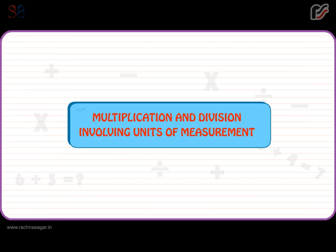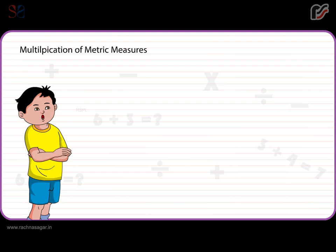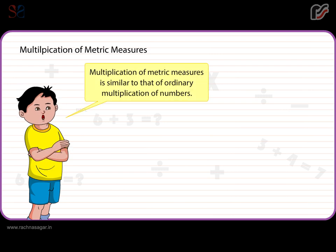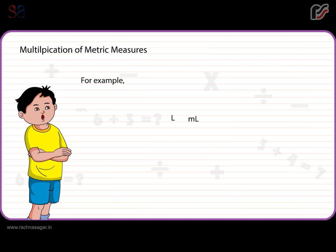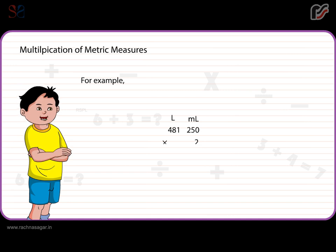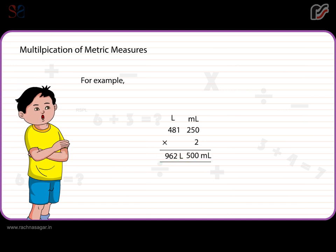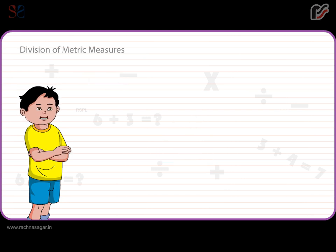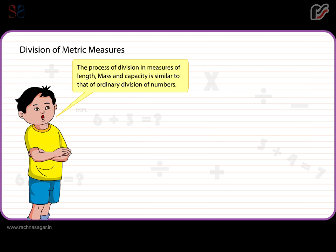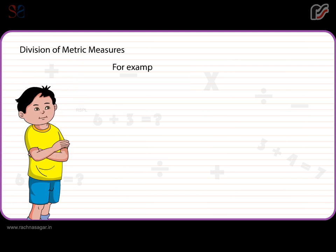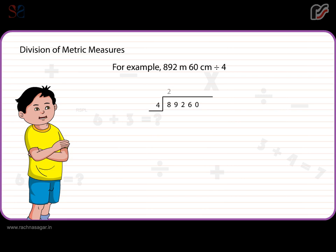Multiplication and division involving units of measurement. Multiplication of metric measures is similar to ordinary multiplication of numbers. For example, 481 liters 250 milliliters multiplied by 2 = 962 liters 500 milliliters. Division of metric measures is similar to ordinary division. For example, 892 meters 60 centimeters divided by 4 = 223 meters 15 centimeters.